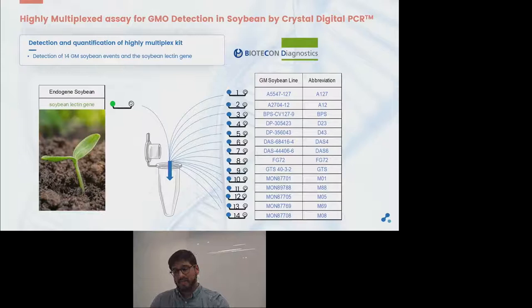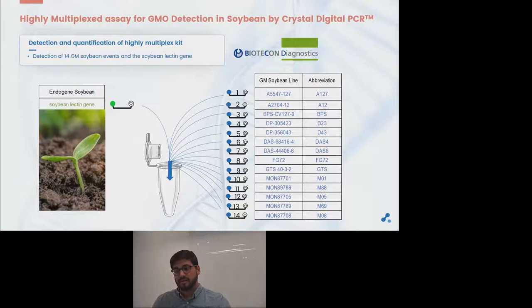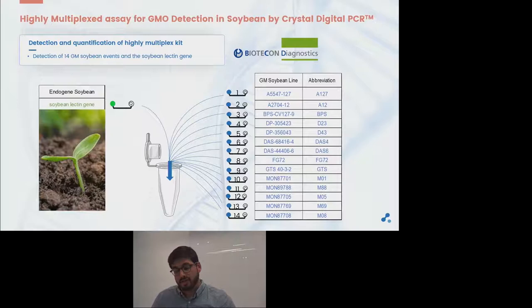In collaboration with Biotechon Diagnostics, we developed a highly multiplexed detection and quantification assay for 14 GM soybean events, all targeted within the same blue channel. We also targeted the soybean lectin endogenous gene to quantify the amount of these events. With this assay, using just one assay, we are able to screen all these GM events and discriminate if the sample tested is GMO-free or not for labeling.